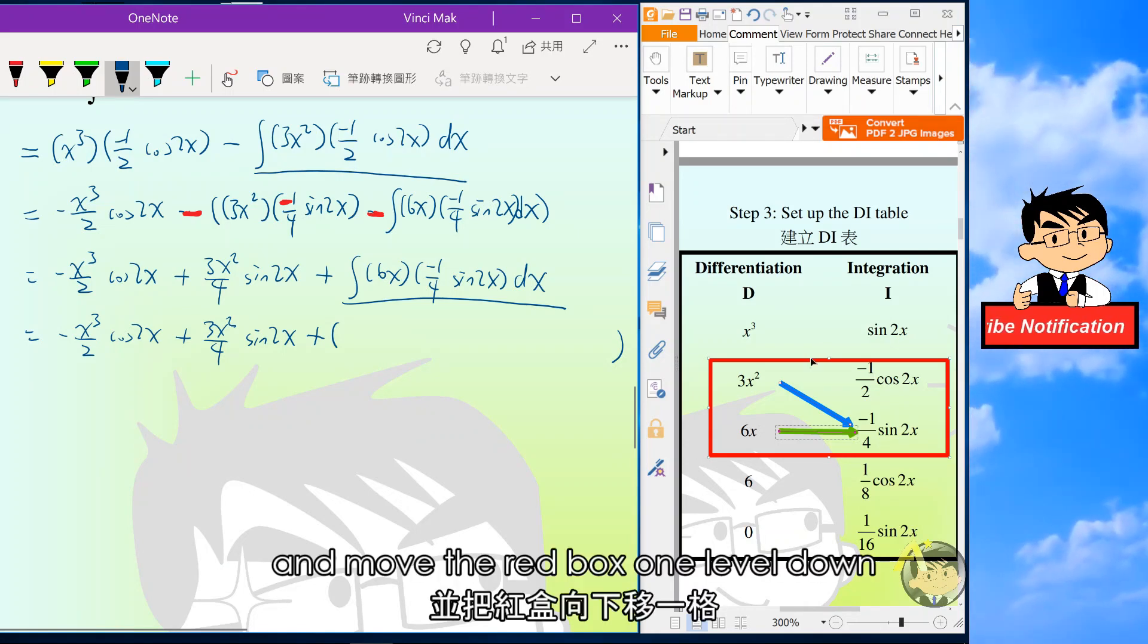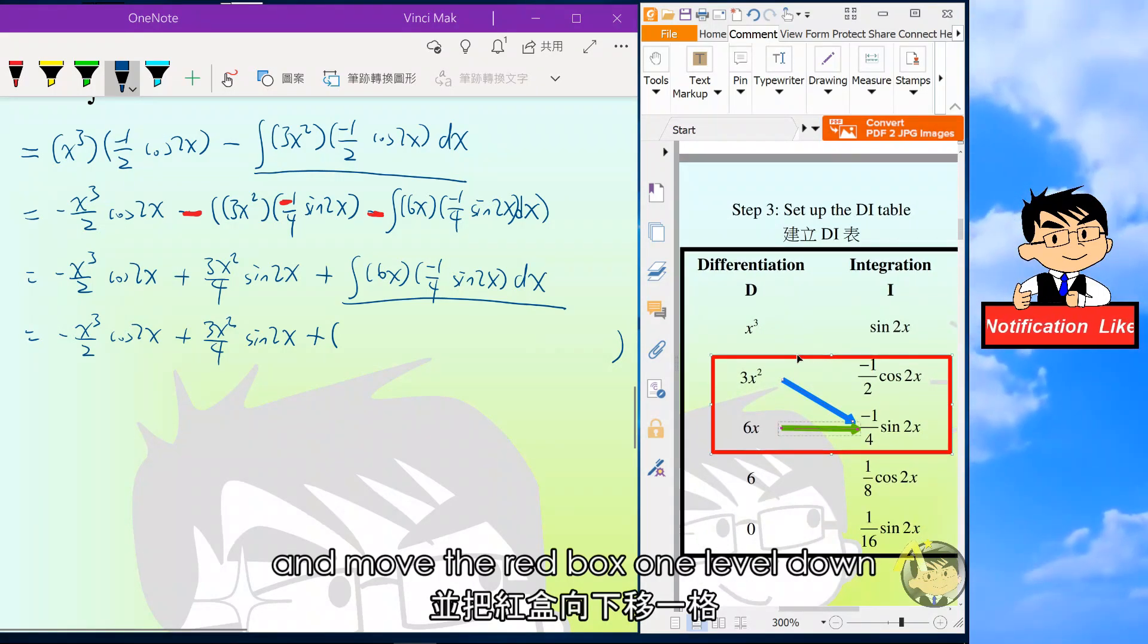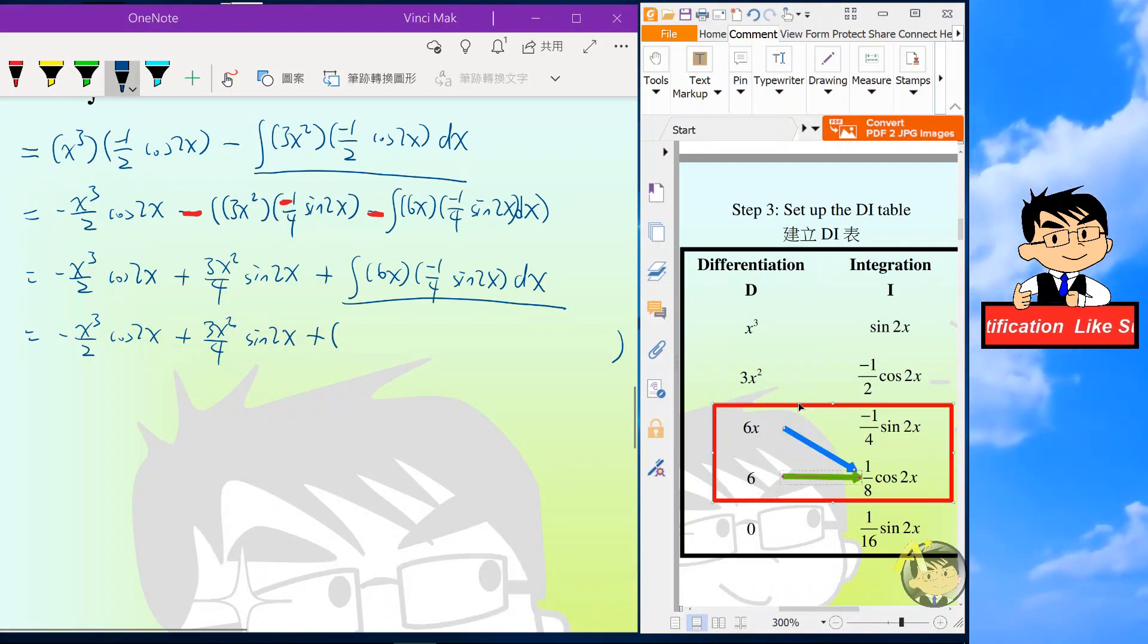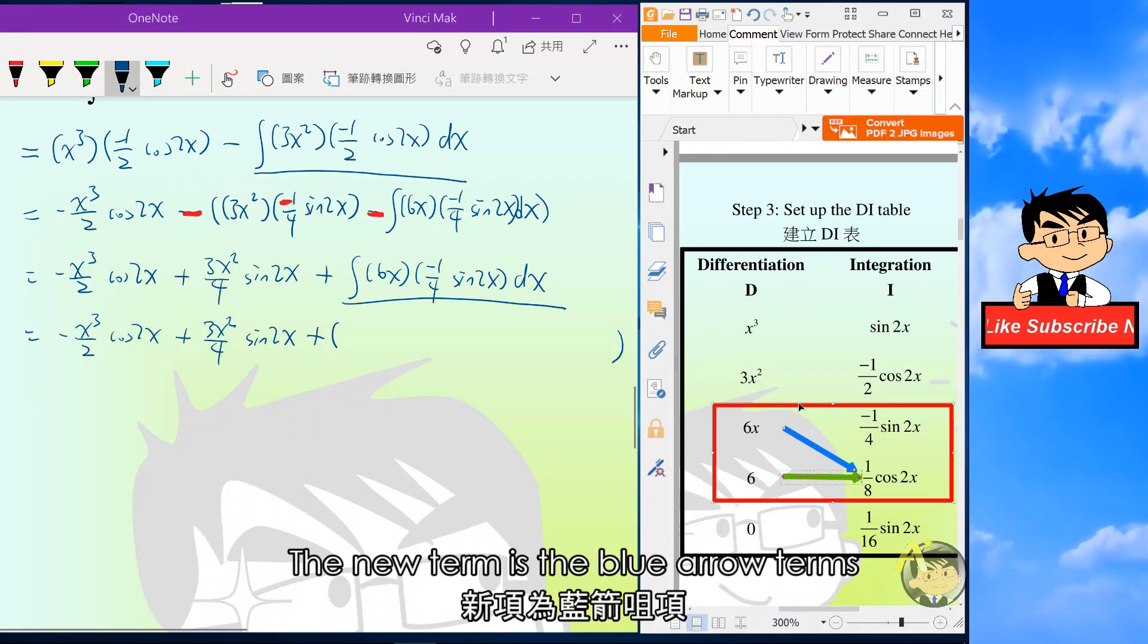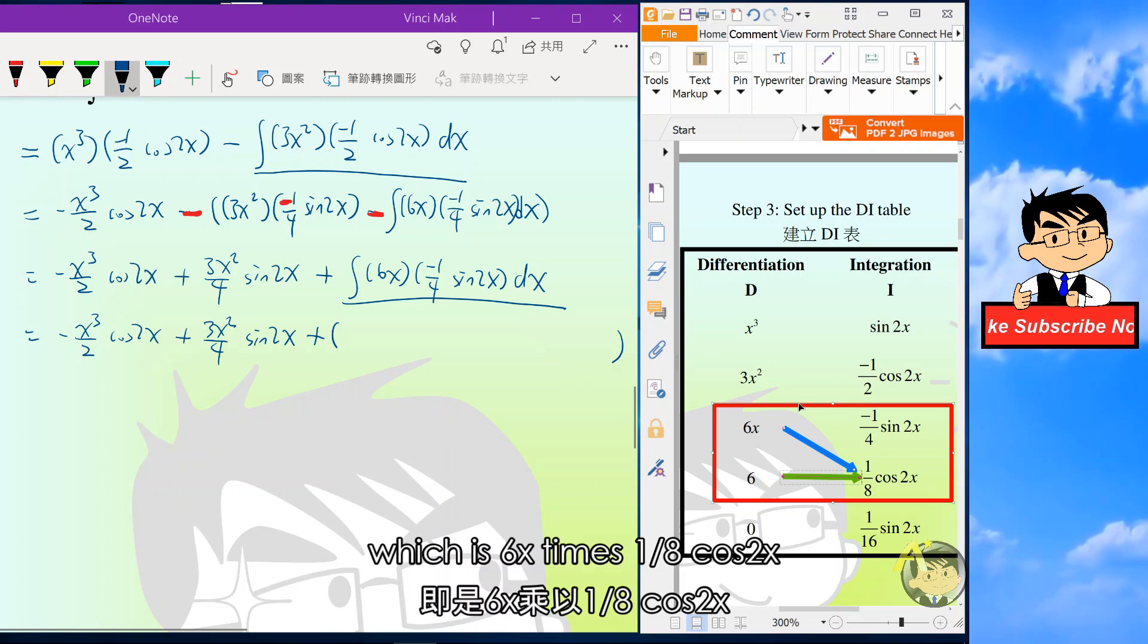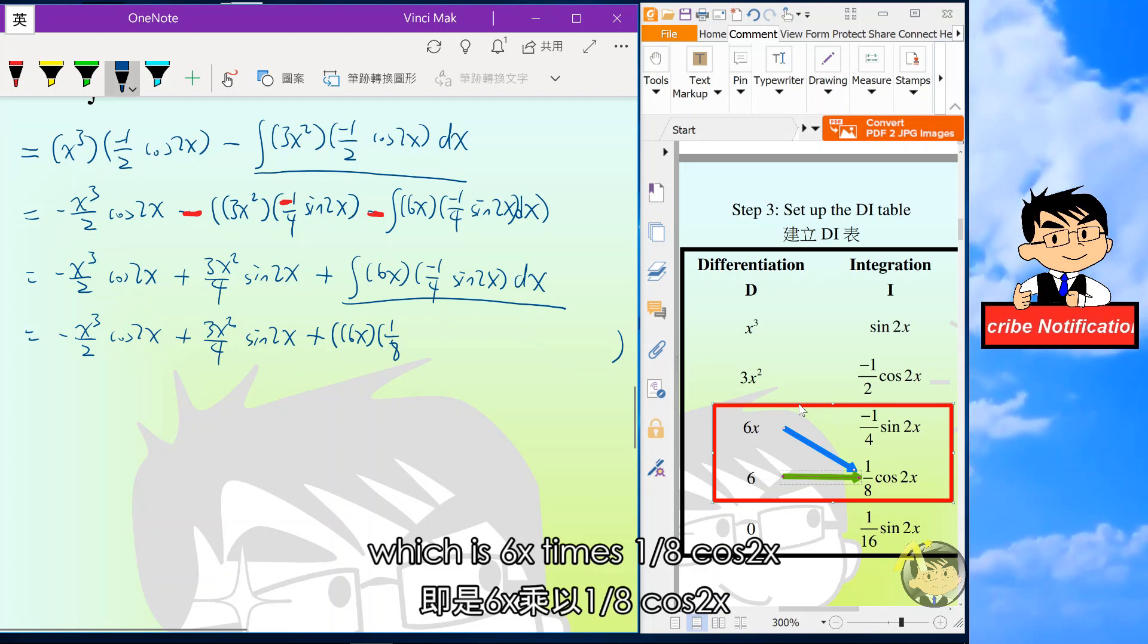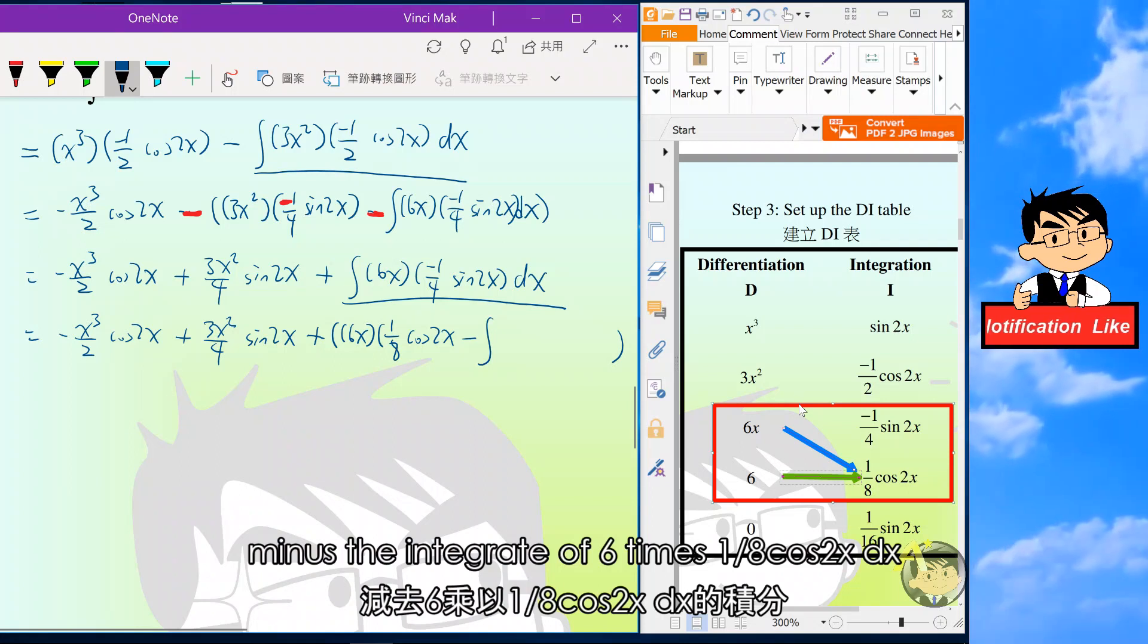And move the red box one level down. The new term is the blue arrow terms, which is 6x times 1 over 8 cosine 2x, minus the integral of 6 times 1 over 8 cosine 2x dx.